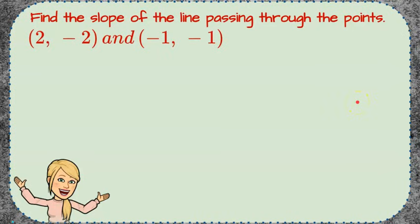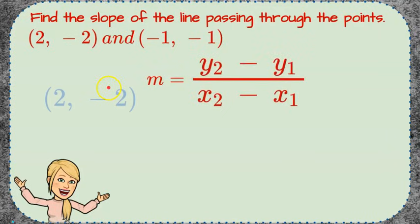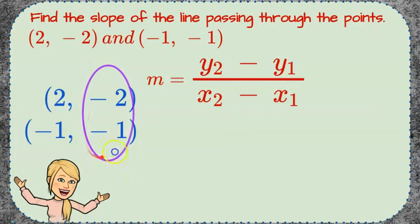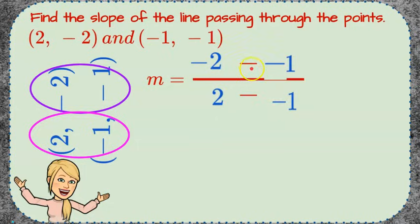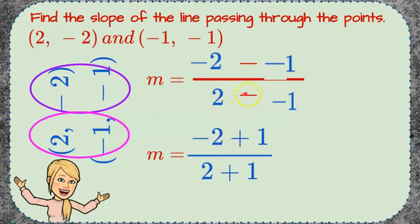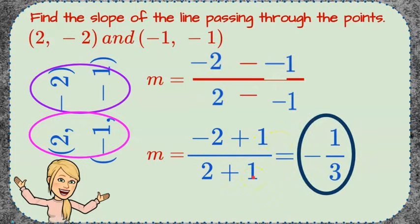Your turn again — please pause the video, find the slope of the line between these two points, and come back when you're done. Welcome back. Using the slope formula, we stack the ordered pairs, identify y and x coordinates, and set up our ratio. We get negative two minus negative one over two minus negative one. Adding the opposite: negative two plus one over two plus one gives us negative one over positive three. So we have a slope of -1/3, meaning the line is sloping downward left to right — a negative slope.